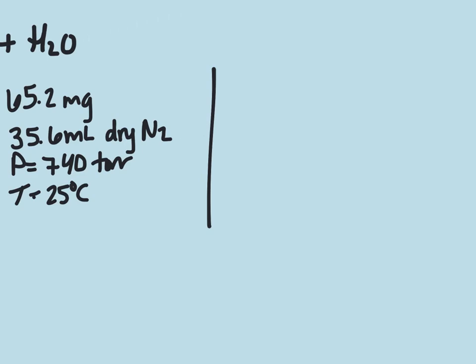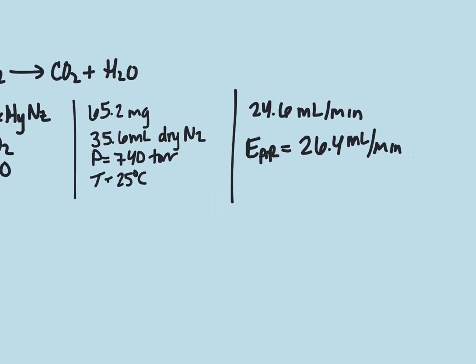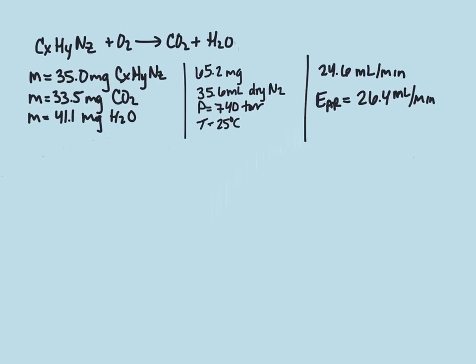And then our final statement is that the effusion rate of the gas is measured and found to be 24.6 mL per minute. And the effusion rate of argon under identical conditions is 26.4 mL per minute. And so using these three bits of information, we're trying to figure out what our X, Y, and Z are here for the chemical formula.